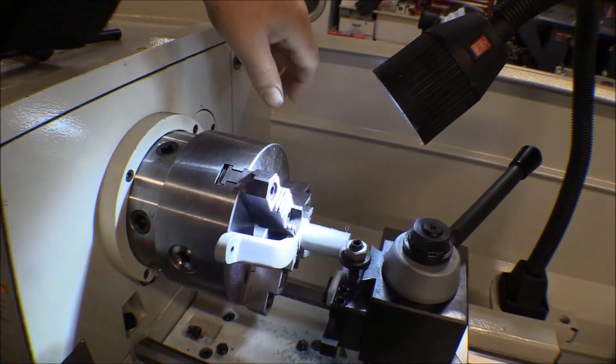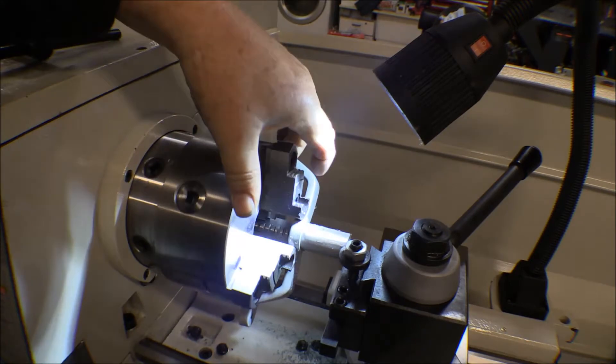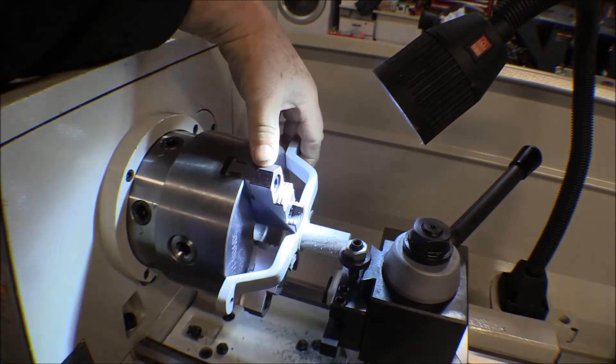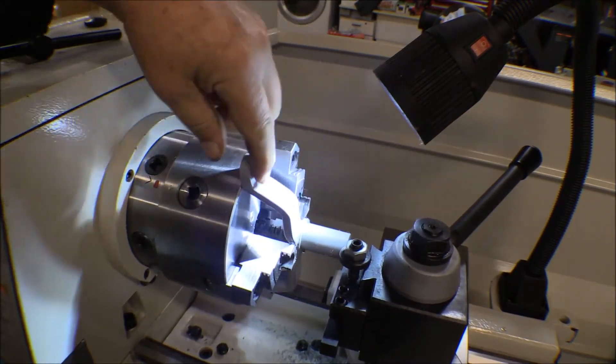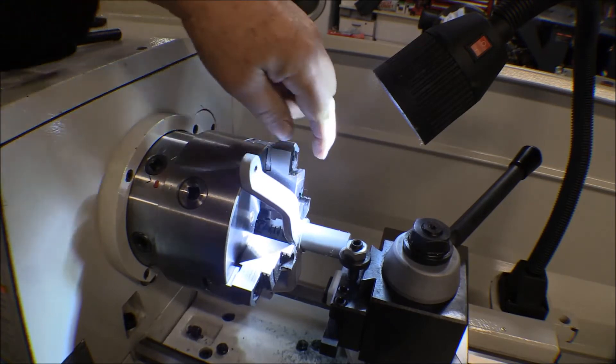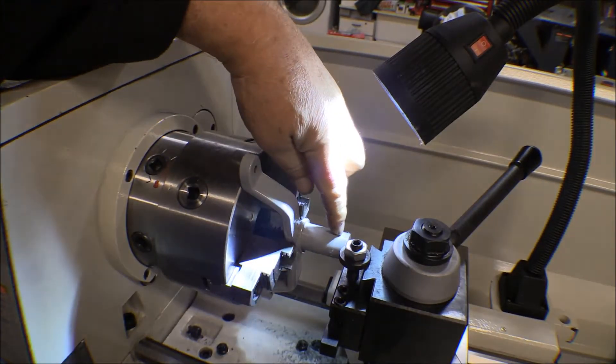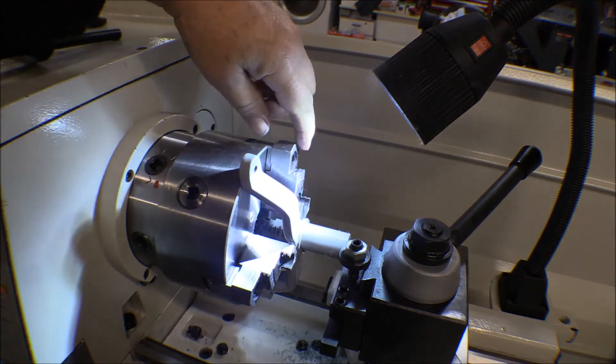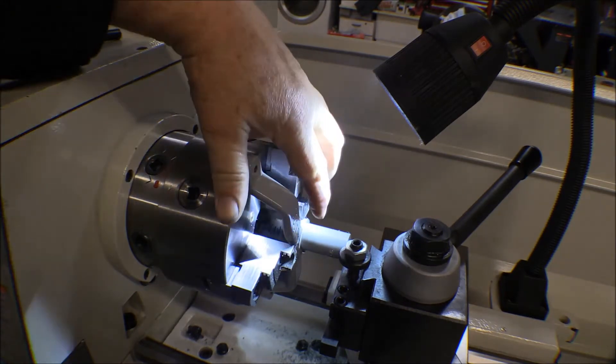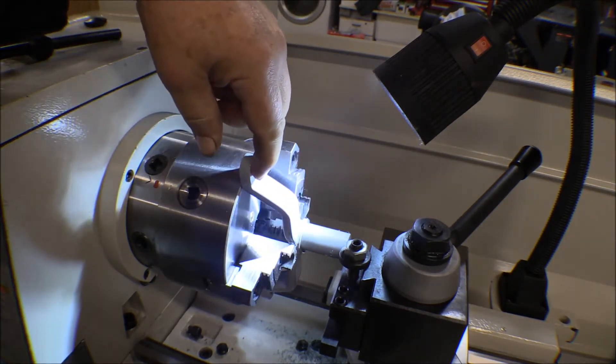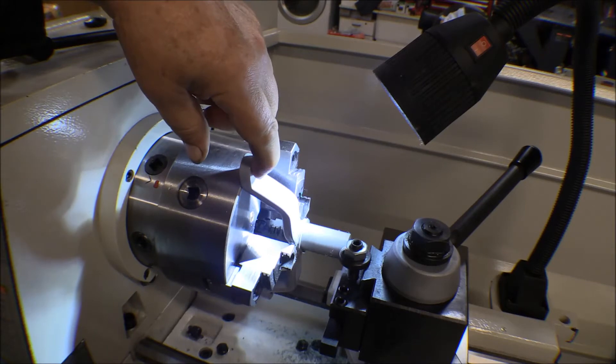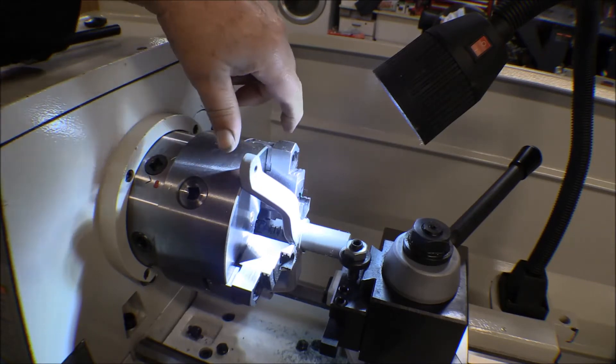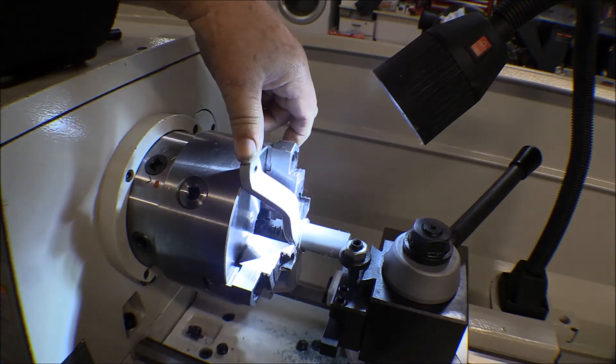Here's my first money job, so to speak. This is the fork for the tailwheel steering. This end here fits up into the tube in the main rudder post and it's bolted into it, and then these ears here hook up a spring and a chain and go up to the tailwheel for steering.